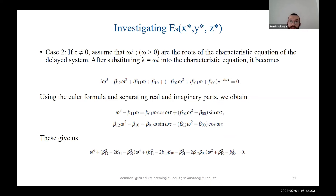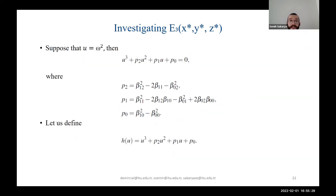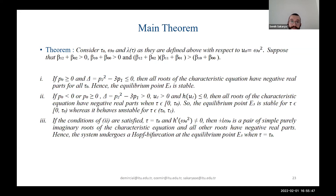Assuming omega i are the roots of the characteristic equation of the delayed system, and substituting into the characteristic equation, we separate the real and imaginary parts. From these two equations we obtain a resulting equation. We then let u equal omega squared and define our h function depending on u. After proving four different lemmas, we obtain our main theorem, though we omit the proofs and lemmas here due to time constraints.